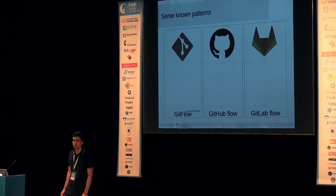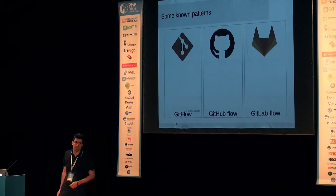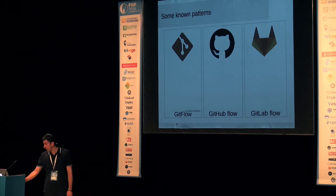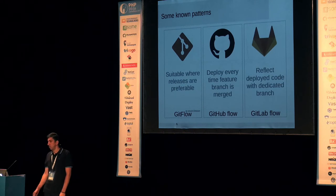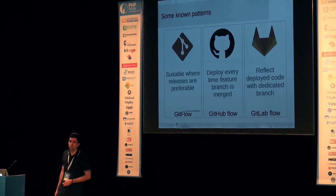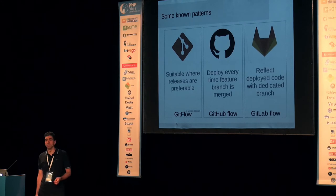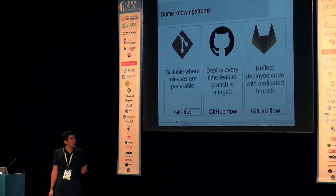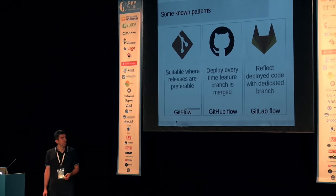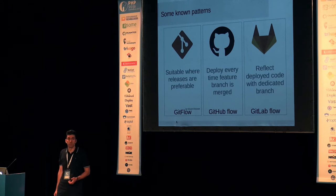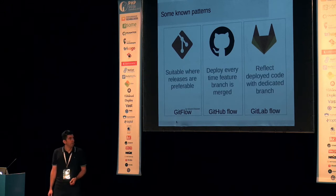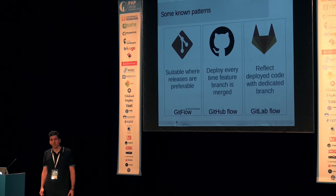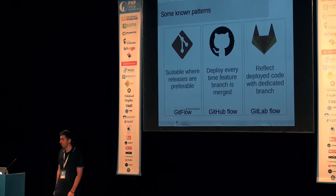Now, when we have those three here, maybe we could describe them in a single sentence each. The GitFlow is usable when scheduled releases are preferable. If you are able to deploy every time a feature branch is merged, you can easily use the GitHub flow, which is a really simple one. And at the very end, you can go with the GitLab flow, so you can always know about what's on production.